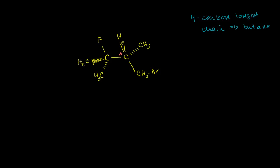To decide which carbon to include in the longest chain, both CH3 groups are the same group. The rule is that the core chain should have as many simple groups attached to it as possible. If we use one carbon as part of the chain, we get a bromomethyl group attached — not as simple. But if we use the other carbon in the longest chain, we get two simple groups: a bromo and a methyl. So we use that carbon, giving us our four-carbon backbone.